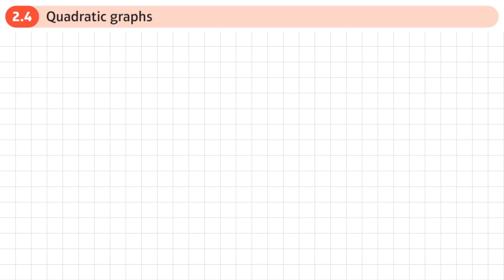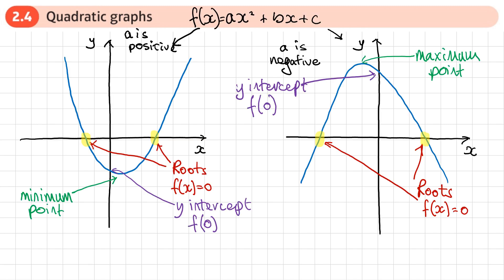This is the fourth section of chapter 2 on quadratics, and this section is about quadratic graphs. This section is all about sketching quadratic graphs, and whenever we sketch a quadratic there are some important points we need to show on our quadratic graph.